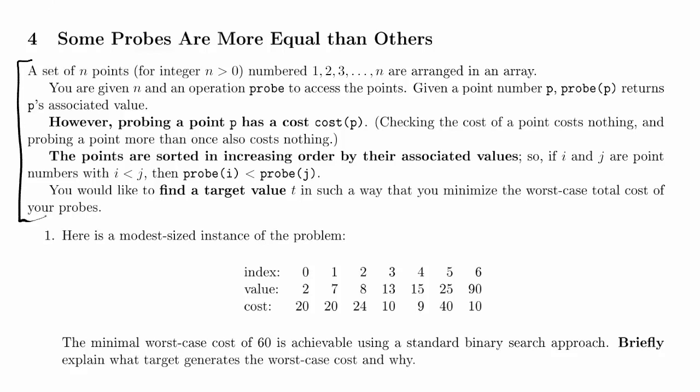So we're reading right here. A set of n points for integer n greater than 0, numbered 1, 2, 3, and so on up to n, are arranged in an array. You're given n, so the number of points, and an operation probe to access the points. Given a point number p, probe of p returns p's associated value.